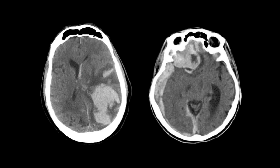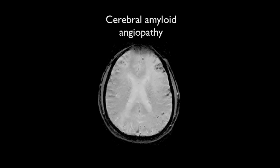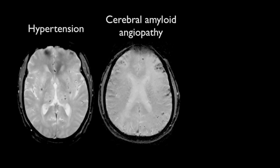The distribution of lobar hemorrhages is due to the distribution of the underlying pathology, namely that of cerebral amyloid angiopathy. This is seen on T2 star weighted or susceptibility weighted MRI images as multiple foci of signal loss scattered peripherally through the cerebral hemispheres. This is in contrast to chronic hypertensive micro-hemorrhages, which are clustered in the basal ganglia, pons, and cerebellar hemispheres, matching the distribution of hypertensive hemorrhages.